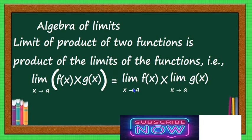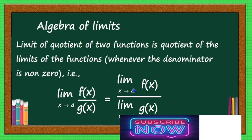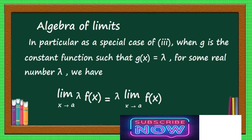The third rule: limit x tends to a of [f(x) · g(x)] = limit x tends to a f(x) multiplied by limit x tends to a g(x). The fourth rule: limit x tends to a of [f(x) / g(x)] = limit x tends to a f(x) divided by limit x tends to a g(x). As a special case, when g(x) = λ (a constant), limit x tends to a of λ·f(x) = λ · limit x tends to a f(x).